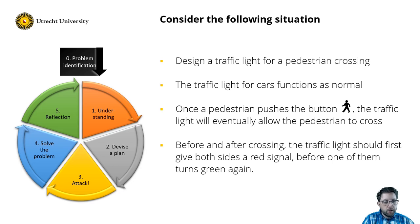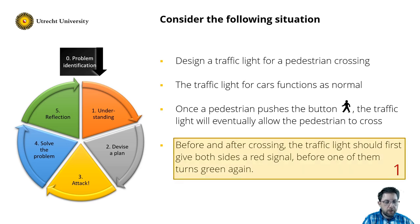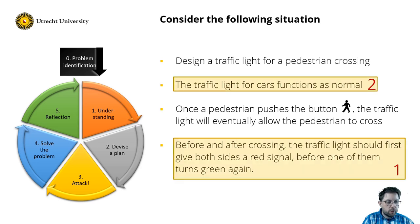Following the reflective modeling cycle, we divide the problem into smaller parts. First, there is a safety criterion. Then the second part is the traffic light for cars, and the third part models the behavior of the pedestrian lights.